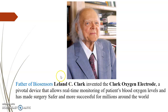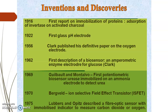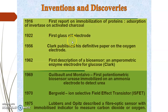Leyland C. Clarke is the father of the biosensor. He invented the Clarke oxygen electrode, which is very much useful for millions around the world for safe surgery. And these are some of the inventions and discoveries. In 1916, the first report on immobilization of proteins was done for adsorption of invertase on activated charcoal. In 1922, the first glass pH electrode was invented, which is used in chemistry labs for determining pH.